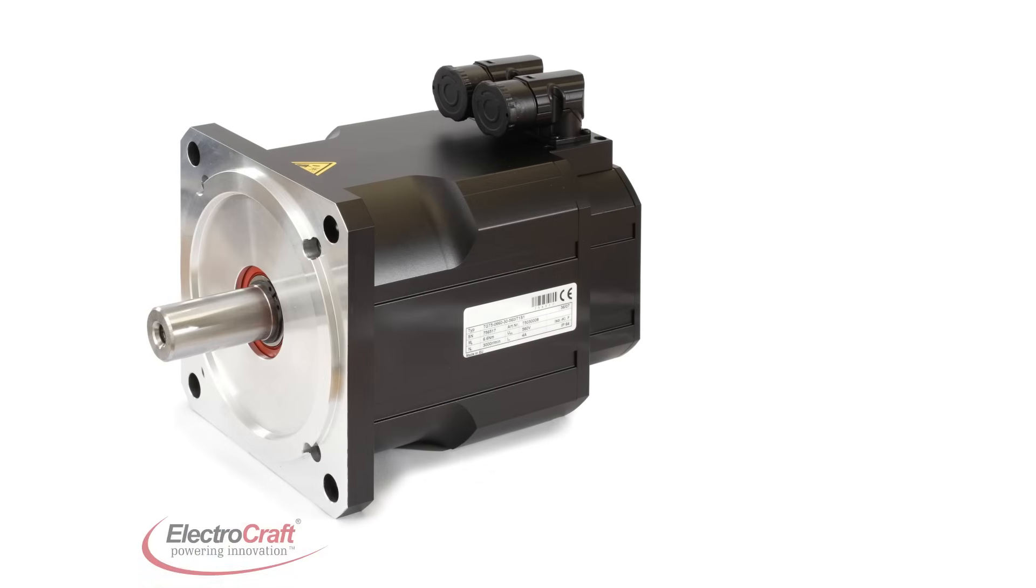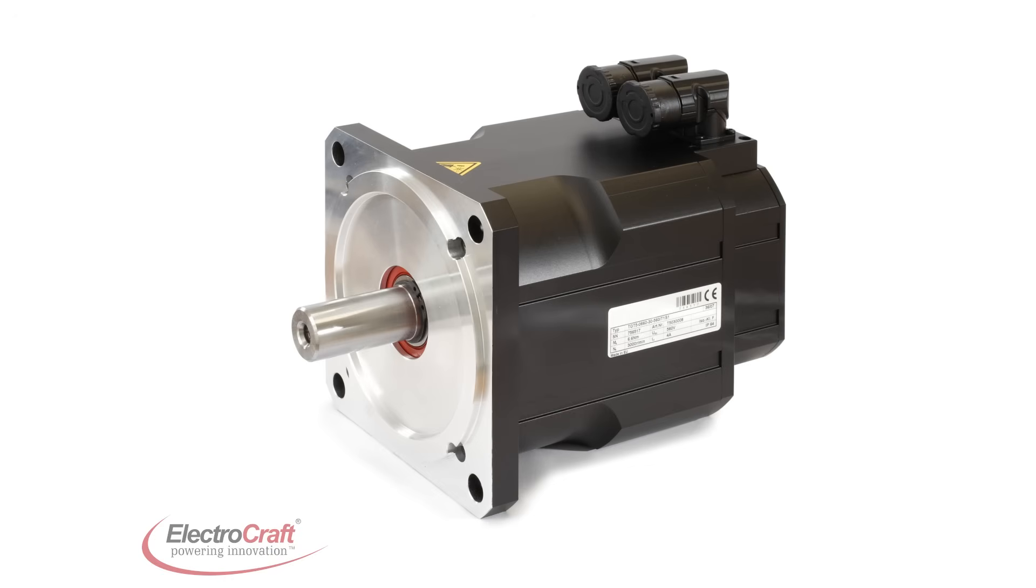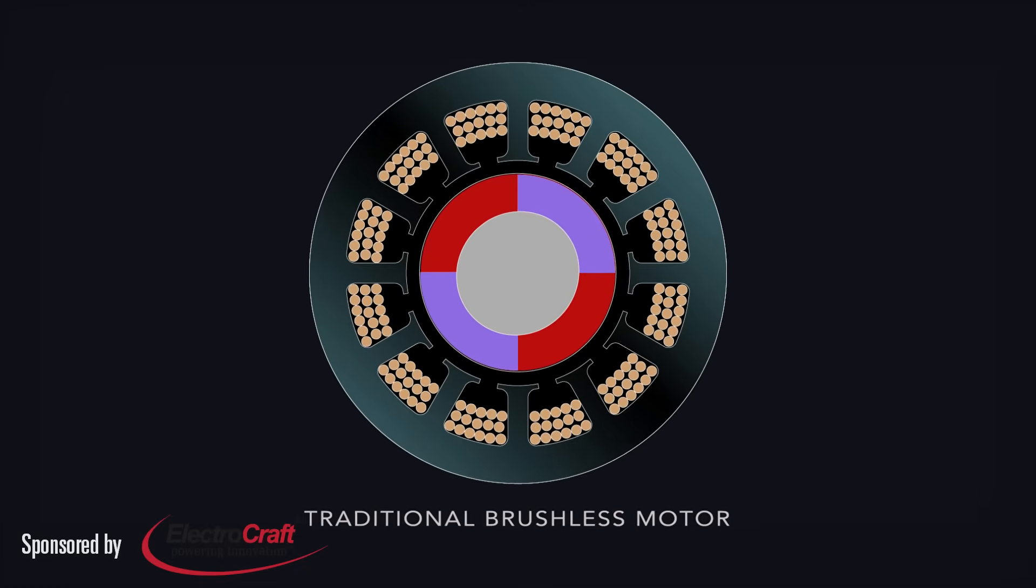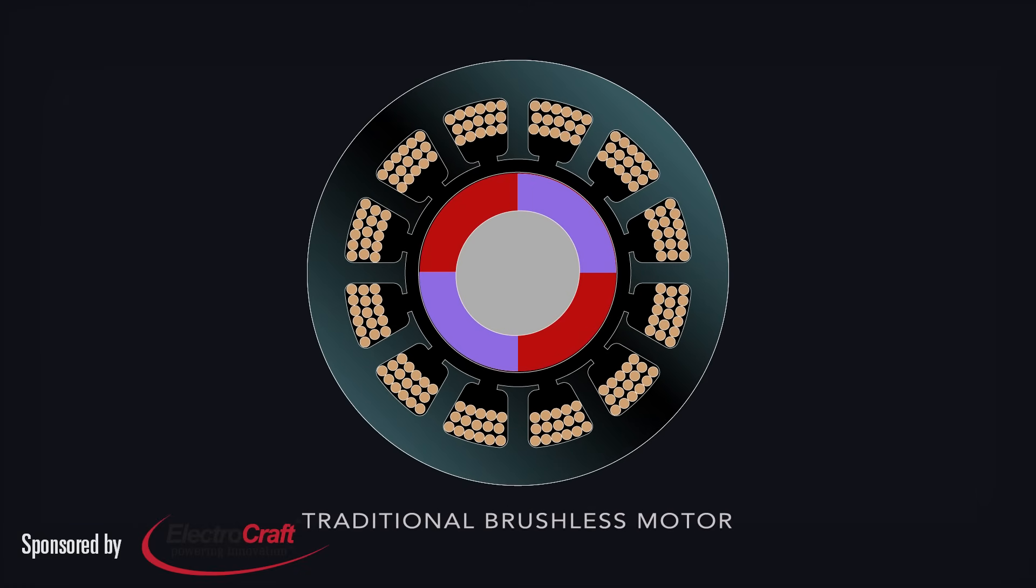But one motor type is usually implied when engineers use the term brushless motor: the permanent magnet design. These don't suffer from brush wear or arcing, but do need electronic current phase commutation.